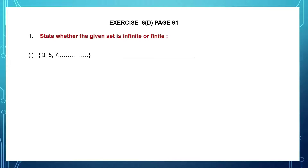Question 1 under this, we have 3, 5, 7 and the dots there tell us that the numbers are going to go on endlessly. That means we cannot count — it's uncountable. So such a set is called an infinite set.